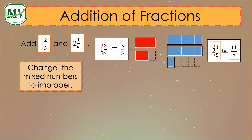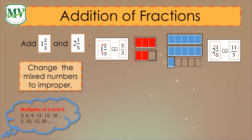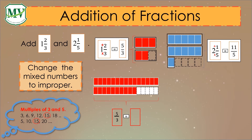We now have improper fractions 5 over 3 and 11 over 5. We cannot add them yet since they have different denominators. We need to make their denominators equal by finding the LCM of 3 and 5. The LCM of 3 and 5 is 15. So let's multiply 5 over 3 by 5: 5 times 5 equals 25, and 3 times 5 equals 15, giving us 25 over 15.